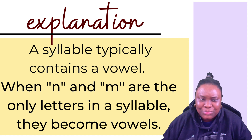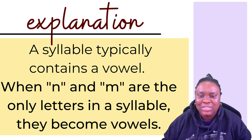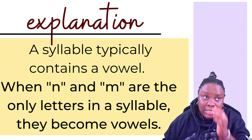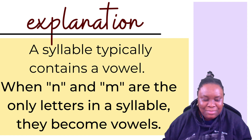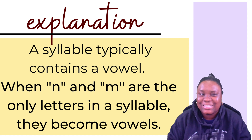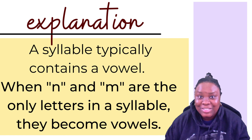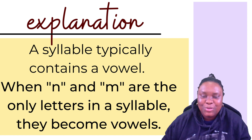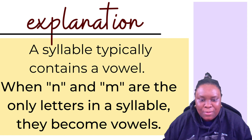Somebody asked me a question — I'll insert a screenshot of it here. It was about my video on tone marks, and one of my examples was alangba, which is 'lizard.' Ala-n-ba — there are four syllables in that word. Because I put a tone mark on ni, they said that is not correct. But in that case, ni is serving as a vowel — it's the only letter in that syllable, so it automatically becomes a vowel as well as a consonant. So yes, it is okay to put tone marks on ni and mi in those instances, in the instance where they become vowels.